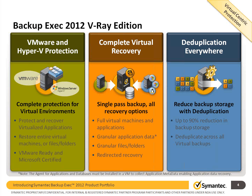With Backup Exec 2012, we've introduced a couple of different ways of licensing. In the past it was traditionally done via agent and options routes. With Backup Exec 2012, we now have what's called V-Ray Edition, solely aimed at customers who are predominantly virtual. If you have two, ten, or twenty ESX hosts, rather than thinking about how many Exchange servers, SQL servers, or physical boxes you have, you simply license on a socket basis — one license per socket — giving you unlimited agents for that virtual machine, the media server license, and deduplication.